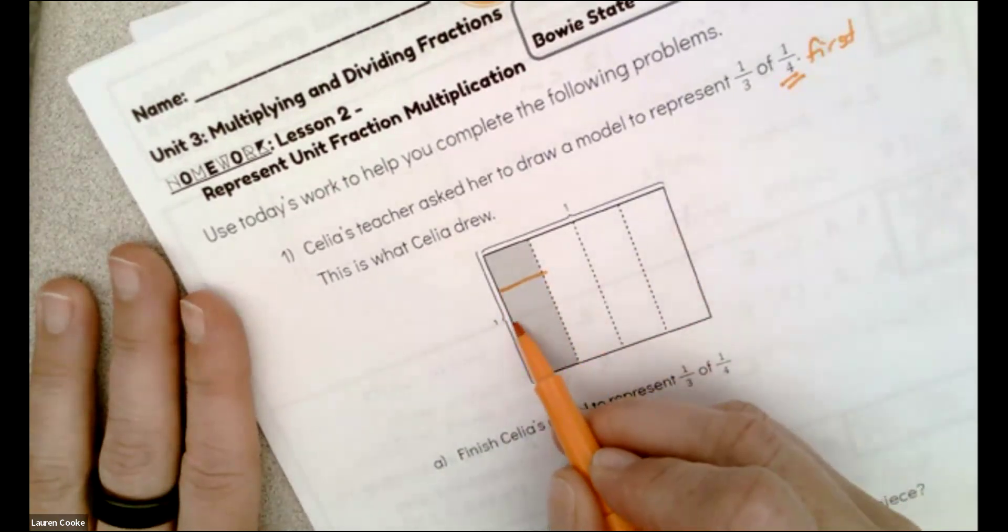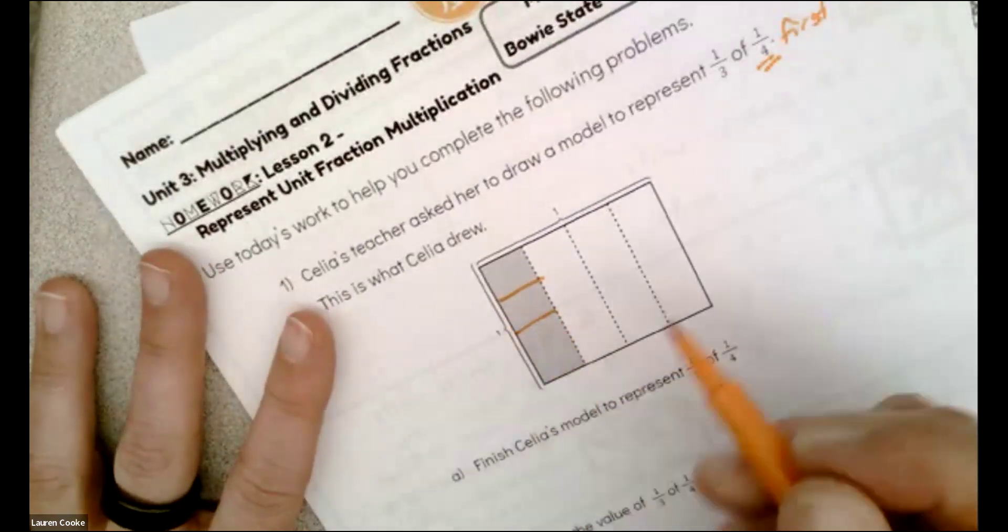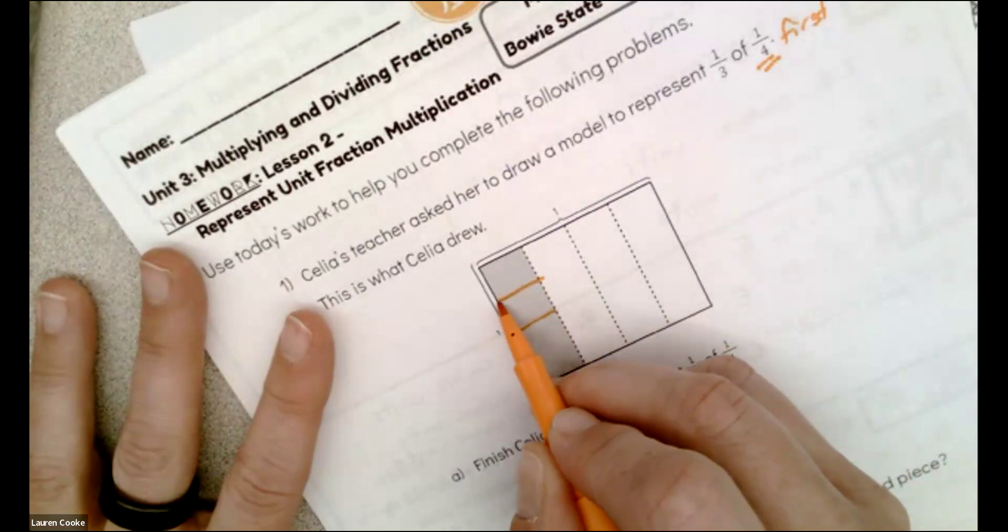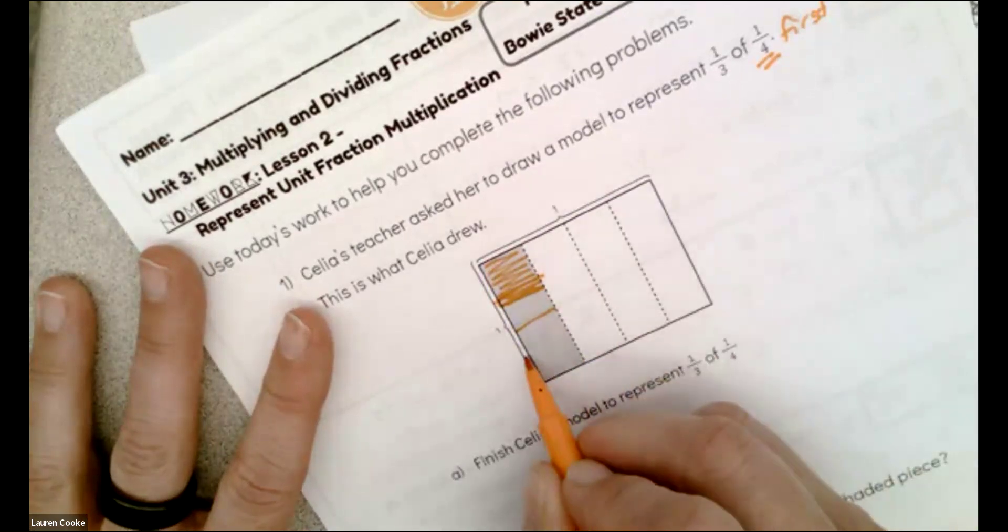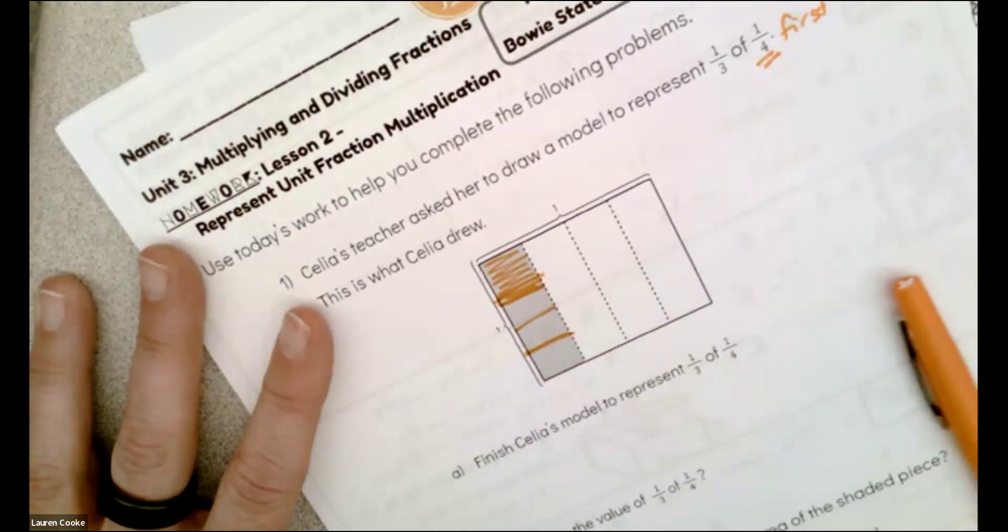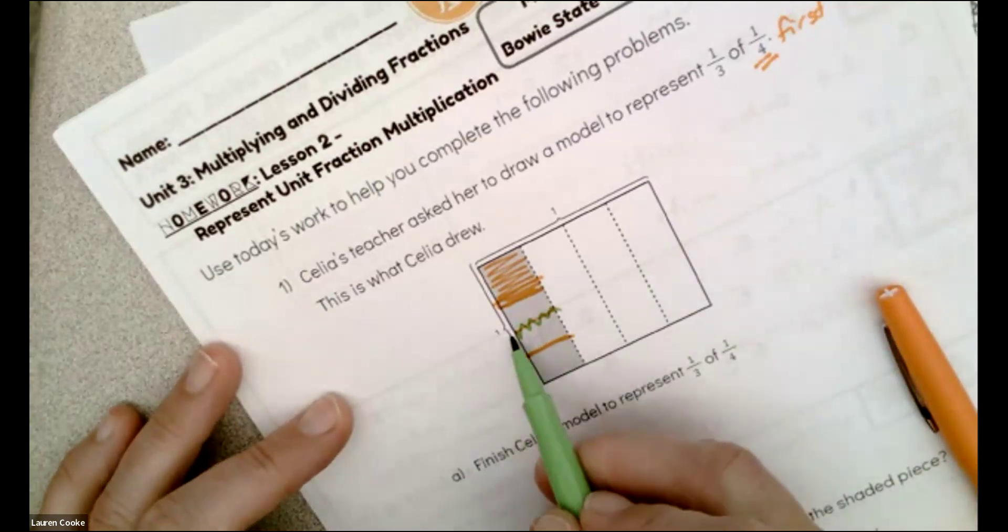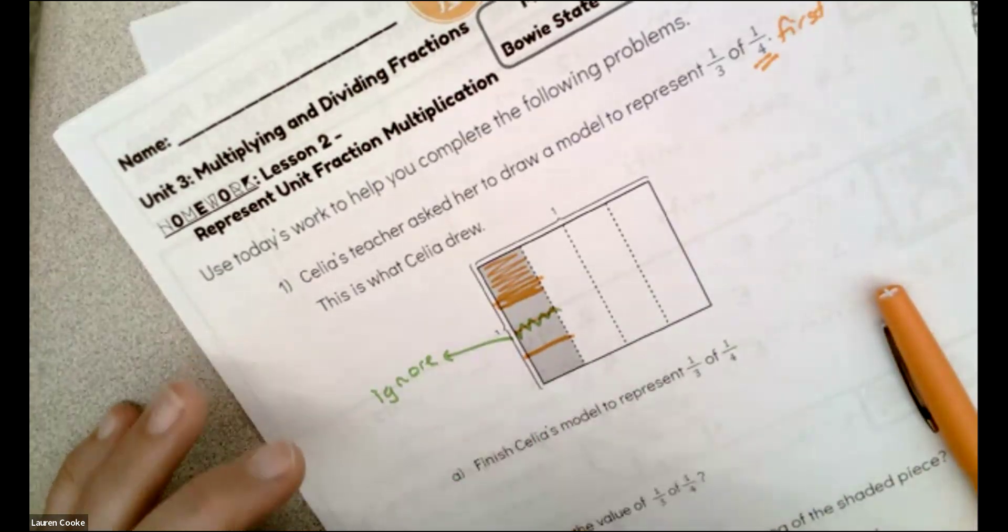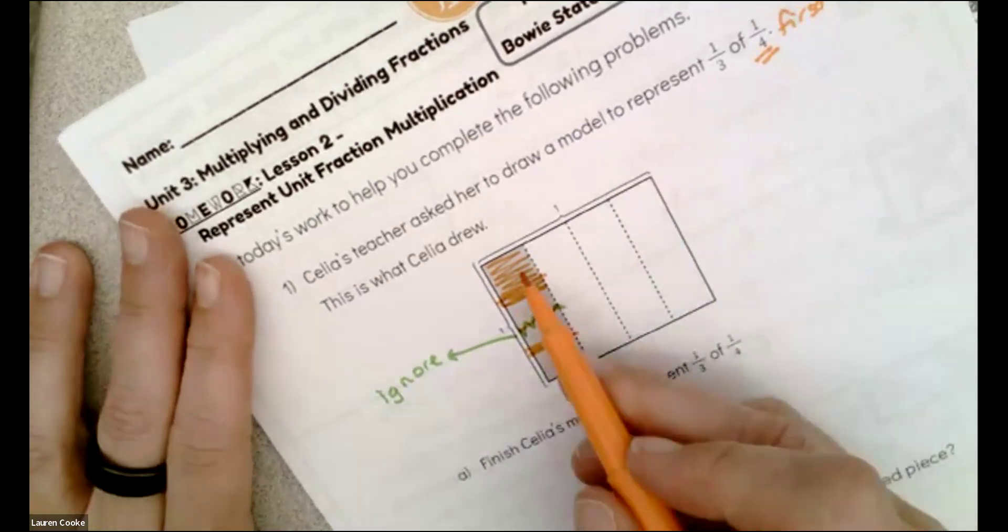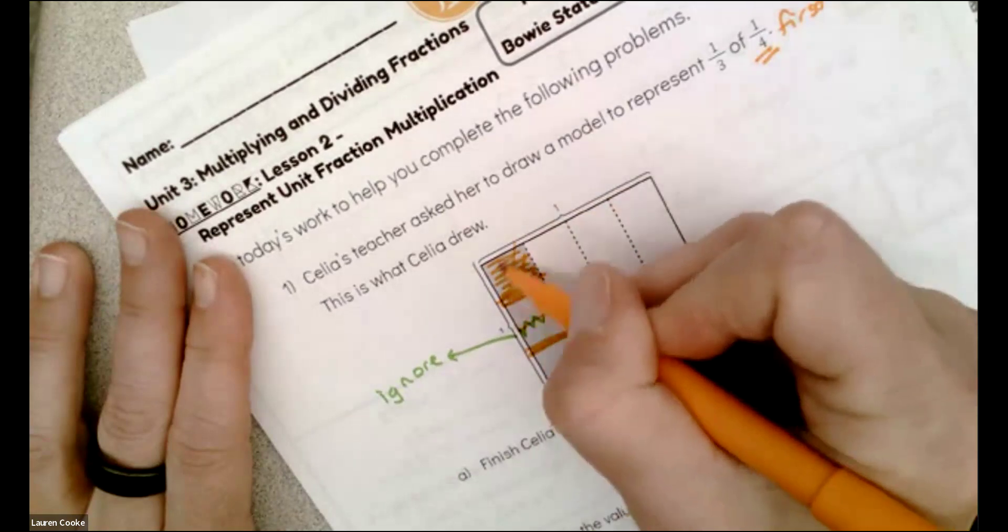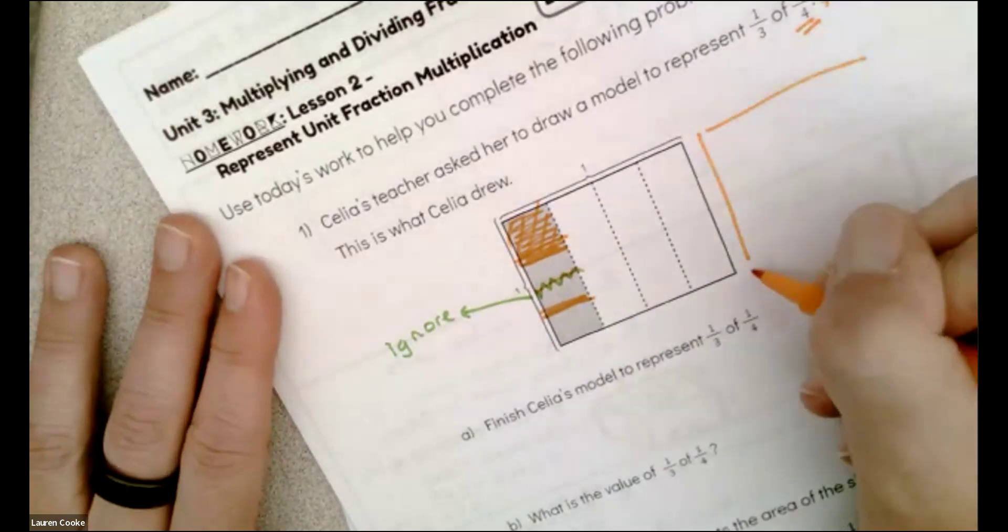So I see Celia's model and I'm going to split my fourths into thirds. I need to make that actually a little bit better, so I'm going to make this a little bit lower. And then this here. I want you just to ignore this. I was taking a one-fourth of it, but that's wrong, ignore. So now I have this one-fourth.